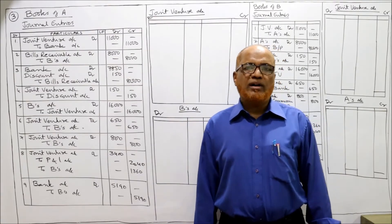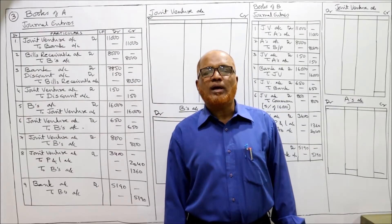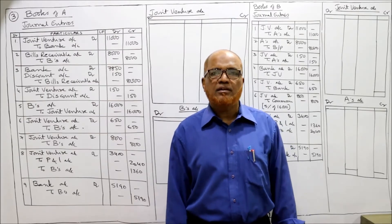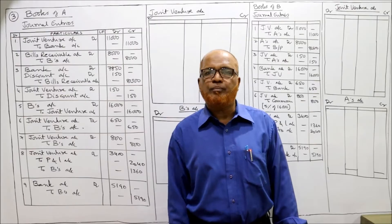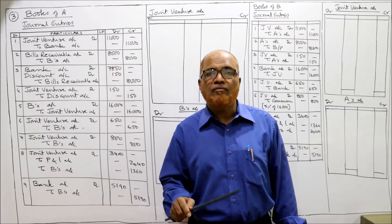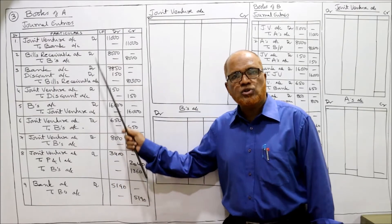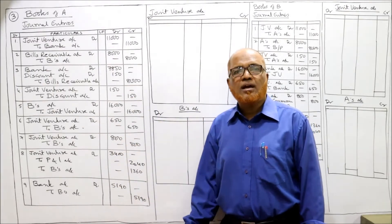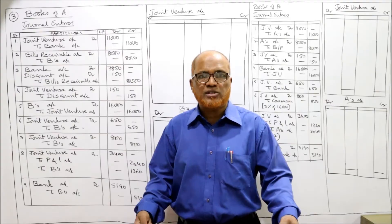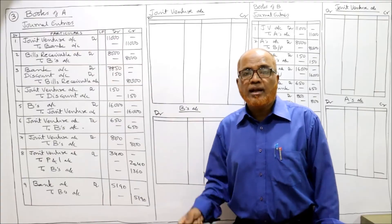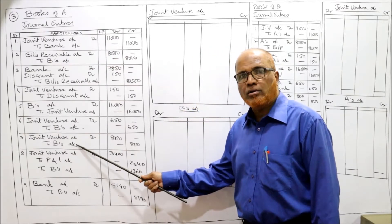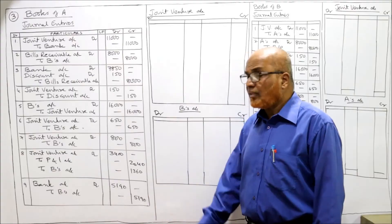According to the agreement of joint venture, B is entitled to a commission of 5% on sales. Total sales made by B is 16,000, so 16,000 into 5% equals 800 rupees commission payable to B. Commission is also an expense of the joint venture, so entry is: Joint Venture Account Dr. to B's Account - 800 - being the commission due to B.